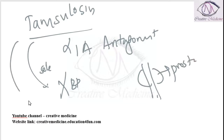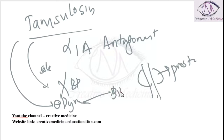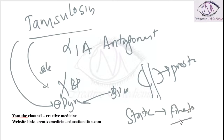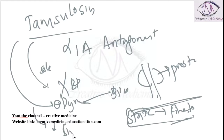Tamsulosin will inhibit the dynamic domain of benign prostatic hyperplasia, whereas the static domain is affected by finasteride. Tamsulosin affects the dynamic domain — it decreases the smooth muscles present in the prostate, and thus contraction is inhibited by Tamsulosin.